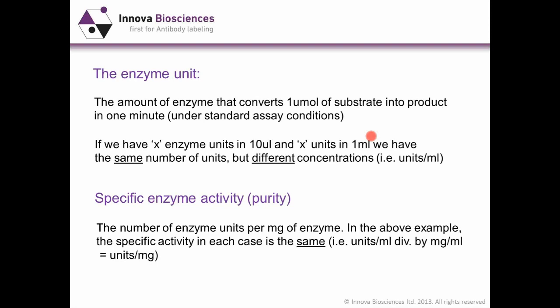Specific enzyme activity is more connected with purity — this is the number of enzyme units per mg of enzyme. In the above example, the specific activity in each case is exactly the same. Essentially, we've divided units per mil by mg per mil to get units per mg. So you can't dilute an enzyme and change the specific activity; you can change the concentration.